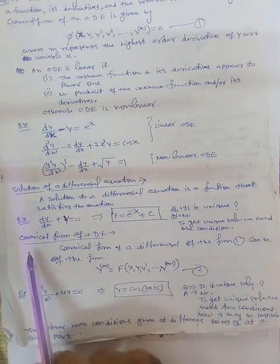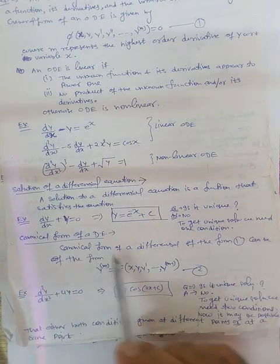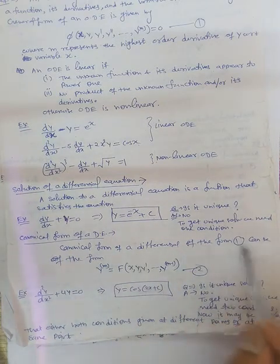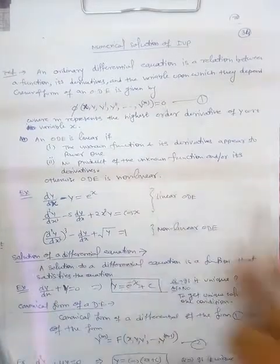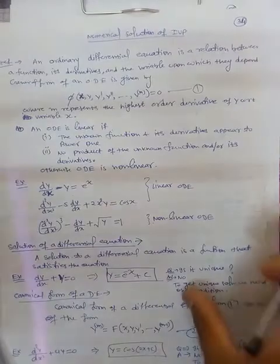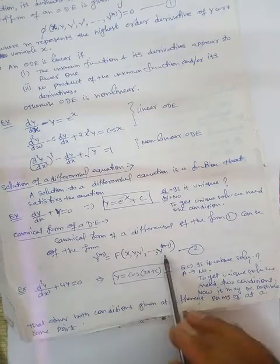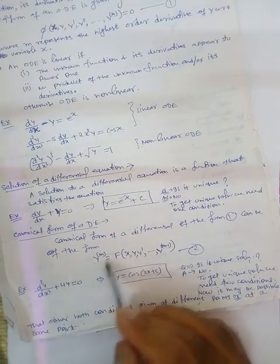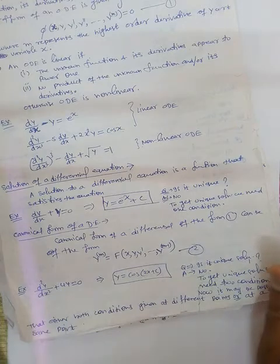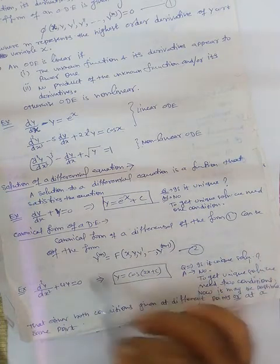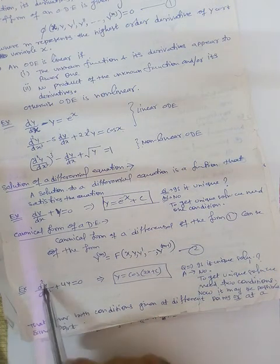Now consider the canonical form of a differential equation. The canonical form of equation of the form phi = 0 is written with the highest order derivative isolated on the left-hand side and all remaining terms on the right-hand side.